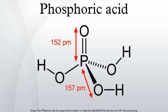The anion after the second dissociation, HPO4²⁻, is the hydrogen phosphate anion. The anion after the third dissociation, PO4³⁻, is the phosphate or orthophosphate anion. For each of the dissociation reactions, there is a separate acid dissociation constant, called Ka1, Ka2, and Ka3, given at 25°C.